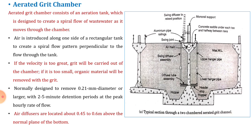The aerated grit chamber consists of an aeration tank. Air is supplied in the grit chamber, which is designed to create a spiral flow of wastewater as it moves through the chamber. The air is introduced along one side of the rectangular tank to create a spiral flow pattern perpendicular to the flow through the tank. As seen in the figure, the air main is provided at the center; hoppers are at the bottom of the tank and a slope is provided so that particles will settle and slide into the hopper.